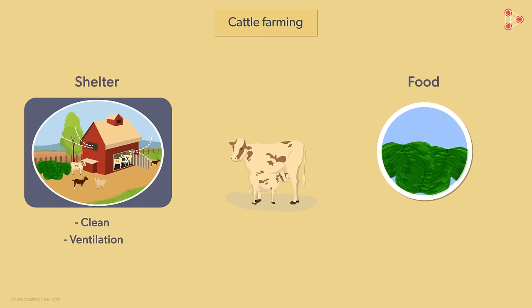Food must be provided for two major reasons. First, food should sustain their needs for maintenance of the body. Secondly, additional food must be provided to suffice their bodily needs for producing milk. Cattle feed must consist of roughage, which is essentially fibre. They should also be provided with micronutrients.